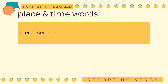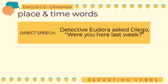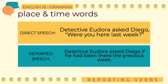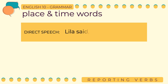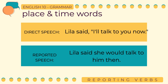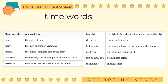In the direct speech, Detective Eudora asked Diego, 'Were you here last week?' The place word is 'here' and the time word is 'last week.' In the reported speech: 'Detective Eudora asked Diego if he had been there the previous week.' The place word was changed from 'here' to 'there,' and the time word was changed from 'last week' to 'previous week.' In another example, Lila said, 'I'll talk to you now.' When transformed to reported speech: 'Lila said she would talk to him then.' The pronoun 'I' was changed to 'she,' and the time word 'now' was changed to 'then.' Here is the list of time words and place words that change from direct to reported speech.